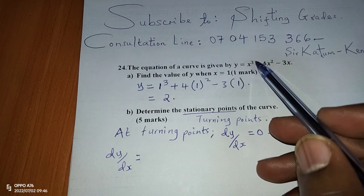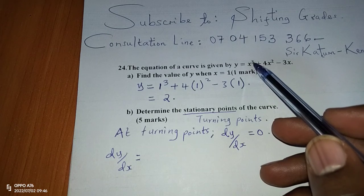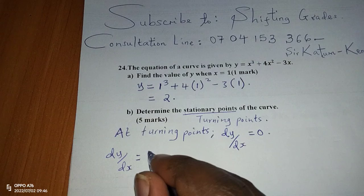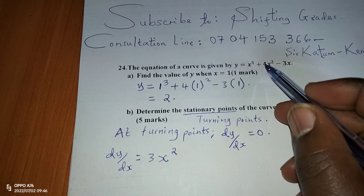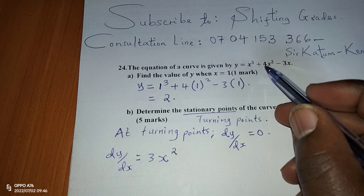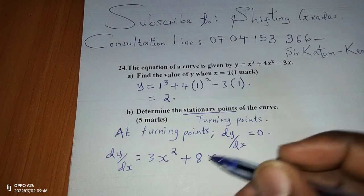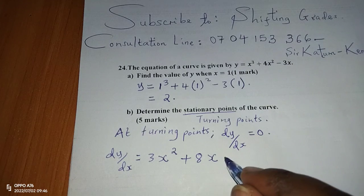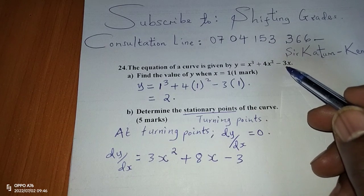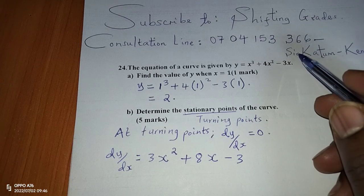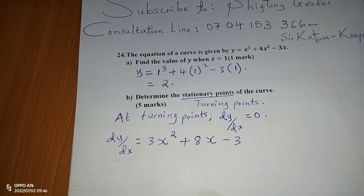Since the function is x cubed plus 4x squared minus 3x, we differentiate term by term: drop the power 3, reduce the power by 1 to get 3x squared; bring down the 2 and multiply by 4 to get 8x; and minus 3 becomes a constant since x to the power 0 is 1. So dy/dx equals 3x squared plus 8x minus 3.